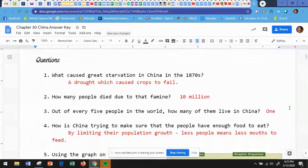Okay, so questions then. Question one, what caused great starvation in China in the 1870s? A drought which caused crops to fail, just like we talked about in the vocabulary. Number two, how many people died due to that famine? 10 million people. Number three, out of every five people in the world, how many of them live in China? One. One out of every five people who live in the world are living in China.